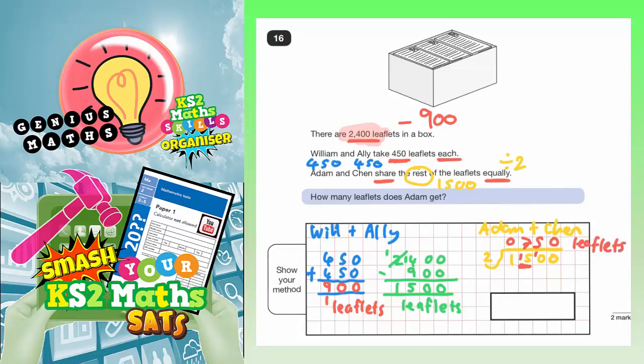The question is, how many does Adam get? Well, Adam and Chen both get the same amount. Chen gets 750, but Adam gets 750 as well. The final answer is 750 leaflets for Adam.